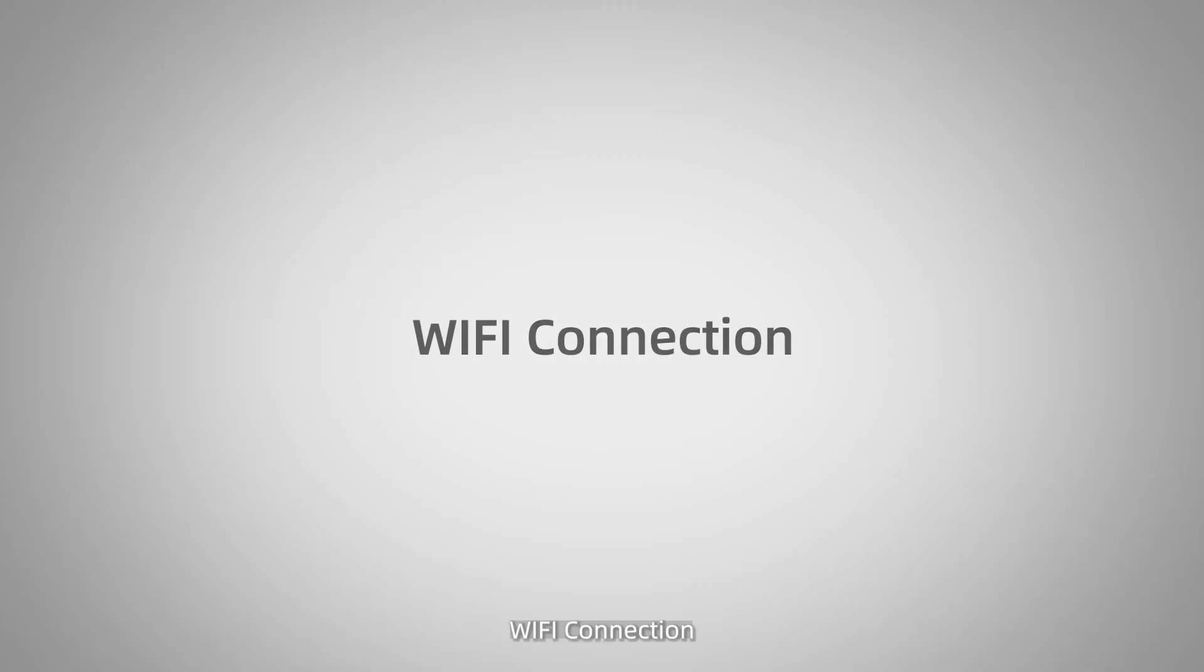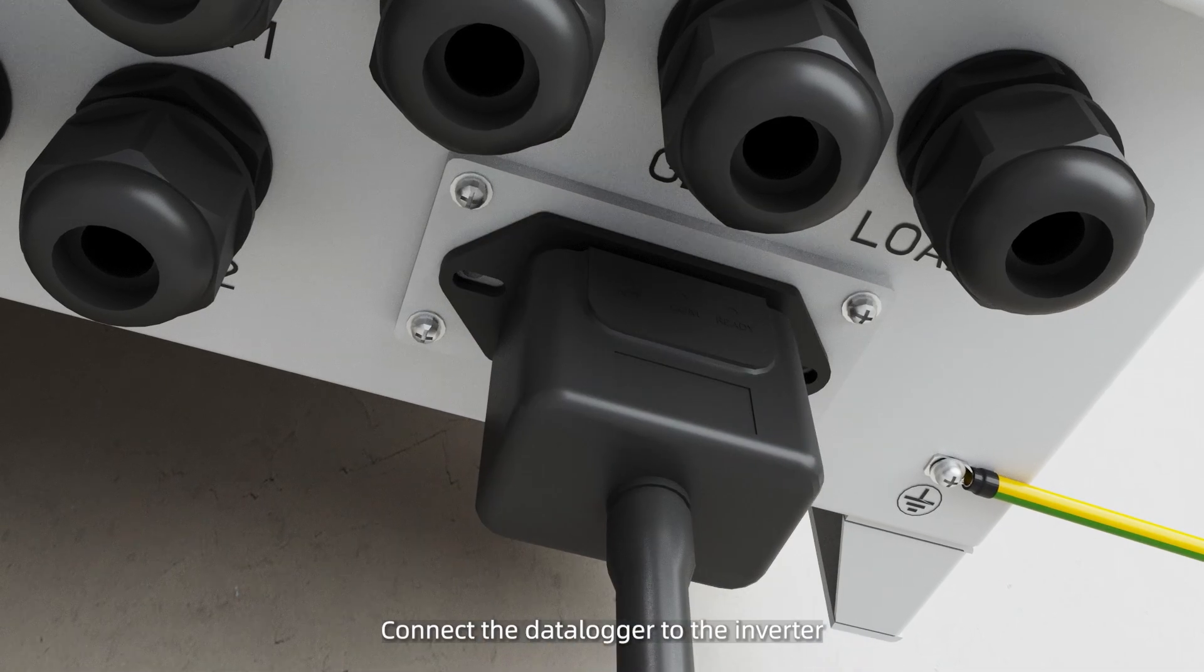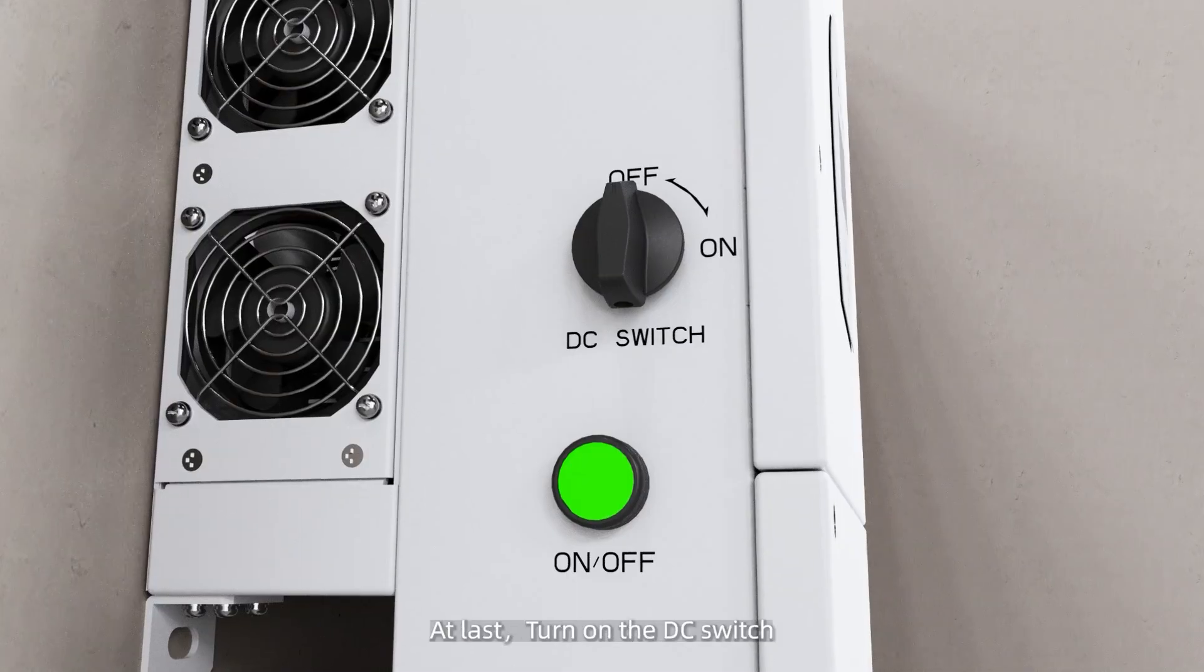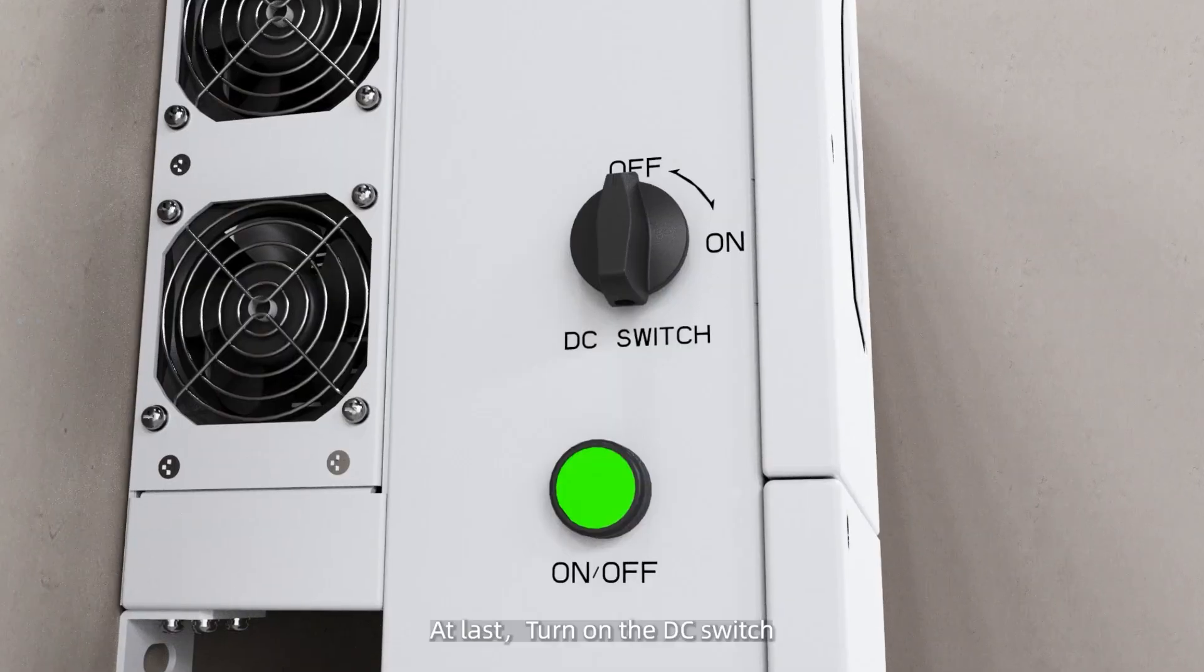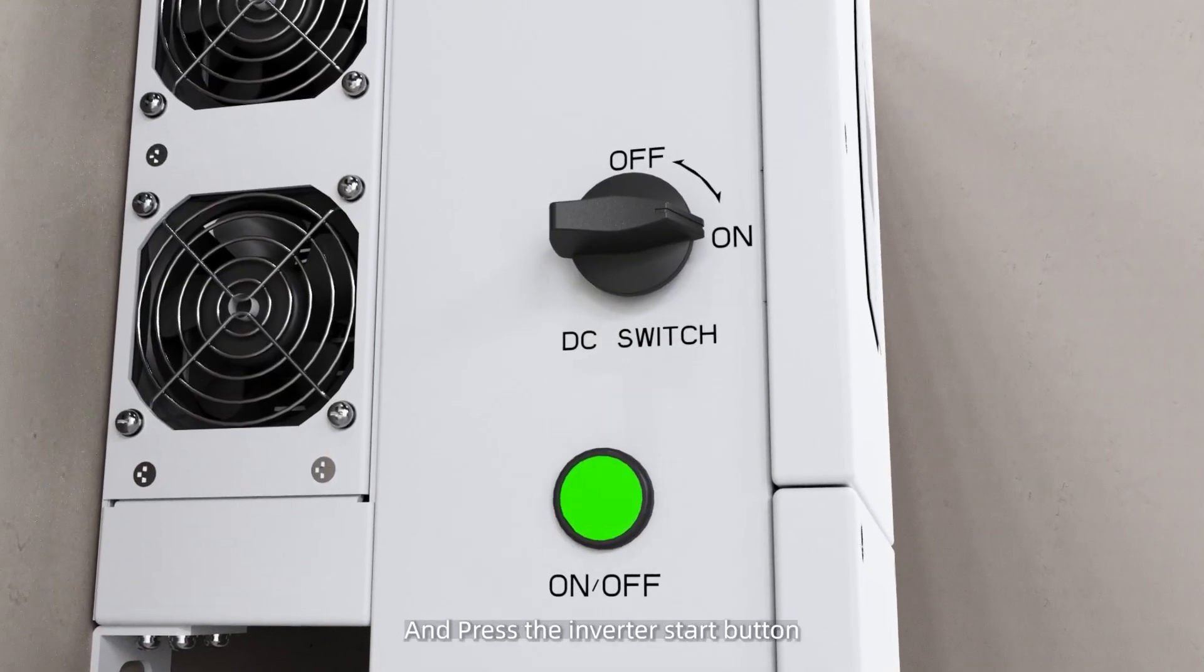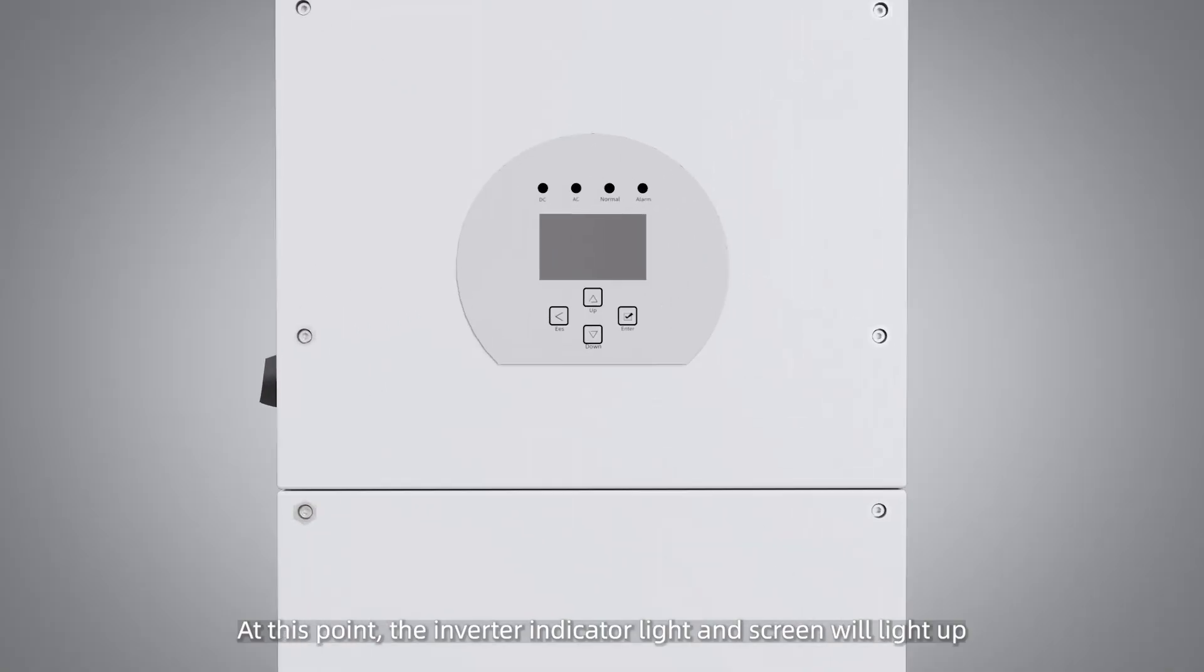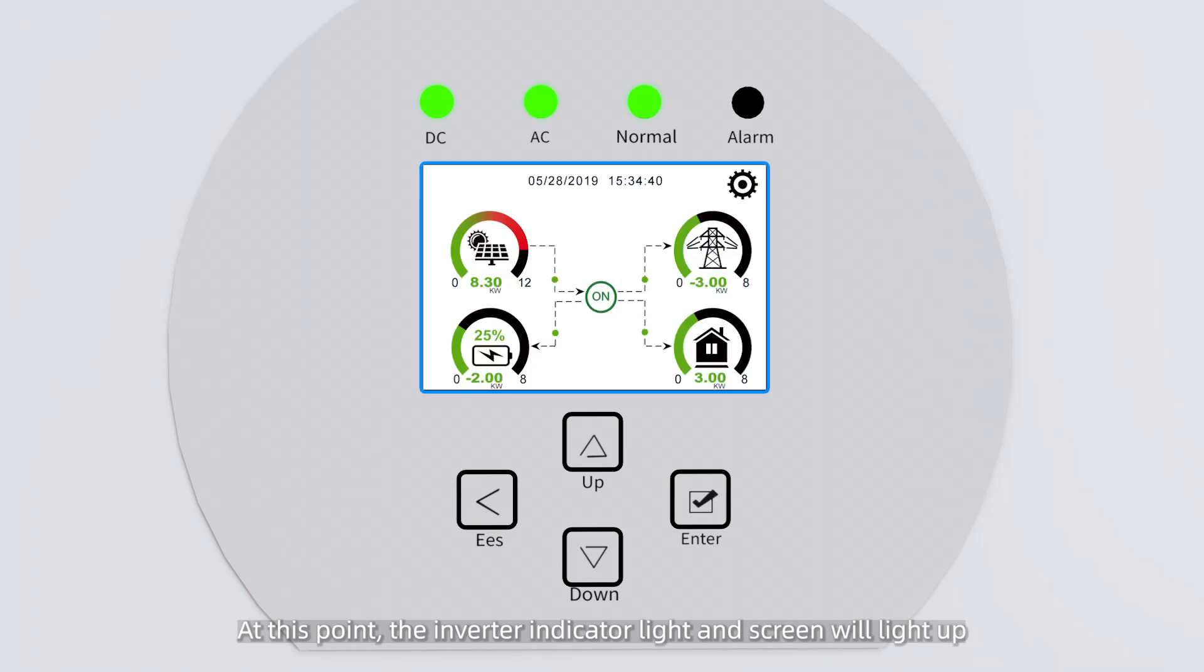Wi-Fi connection. Connect the data logger to the inverter. At last, turn on the DC switch and press the inverter start button. At this point, the inverter indicator light and screen will light up.